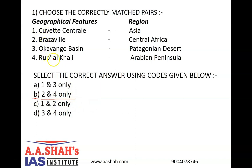Statements 1 and 3 are incorrect. The first statement is incorrect because Kuwait Central is a region of forest and wetlands in the Democratic Republic of the Congo. The region lies on the equator and the climate is tropical and humid, with rainfall averaging about 2000 mm annually. The region contains peat and is one of the world's biggest stocks of soil carbon.